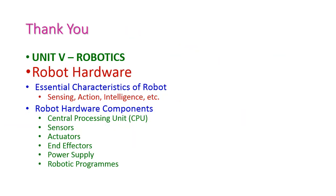So far we have seen robot hardware from the fifth unit on robotics. Under this topic we covered the essential characteristics of robots — sensing, action, and intelligence — and the hardware components: central processing unit, sensors, activators, end effectors, power supply, and robotic programs. These are the most essential components for a robot. For more information, please refer to the textbook. In the next class we will see another important topic from the fifth unit. Thank you.